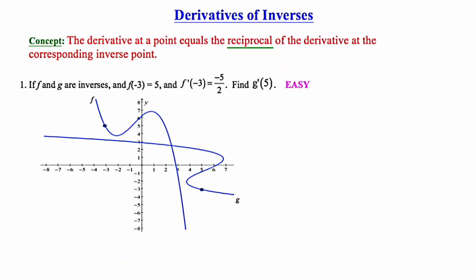Hey there, this is MathCamp321, and this lesson will be on how to find the derivative of an inverse. The key concept is: the derivative at a point equals the reciprocal of the derivative at the corresponding inverse point. I want to be very clear that it's just a reciprocal, not the opposite reciprocal, like you might use if two lines were perpendicular.